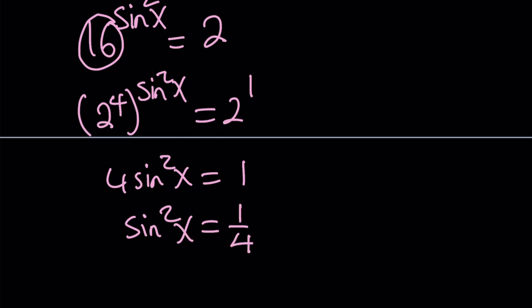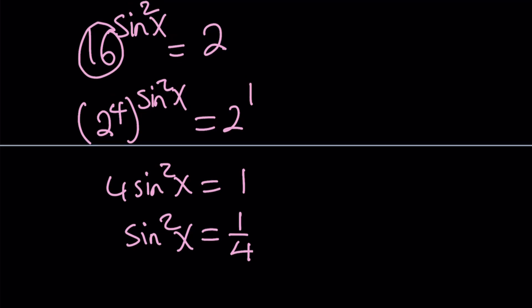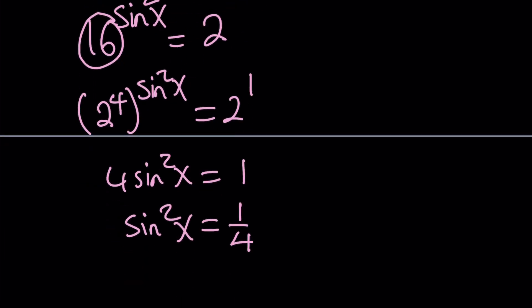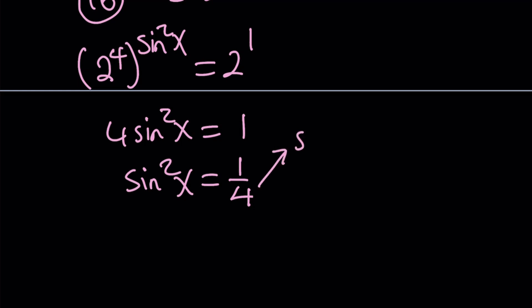Notice that we didn't square both sides. We just used substitution and came up with a quadratic, so all solutions should be valid. From here I get sine x is 1/2 or negative 1/2.